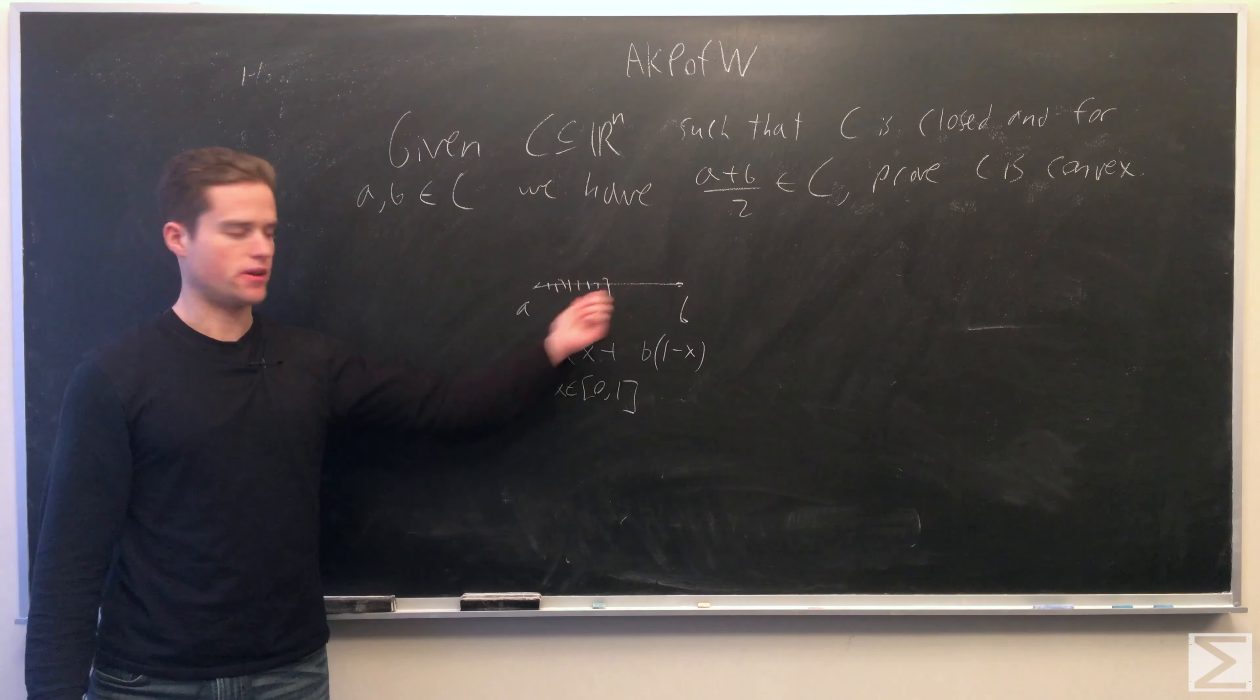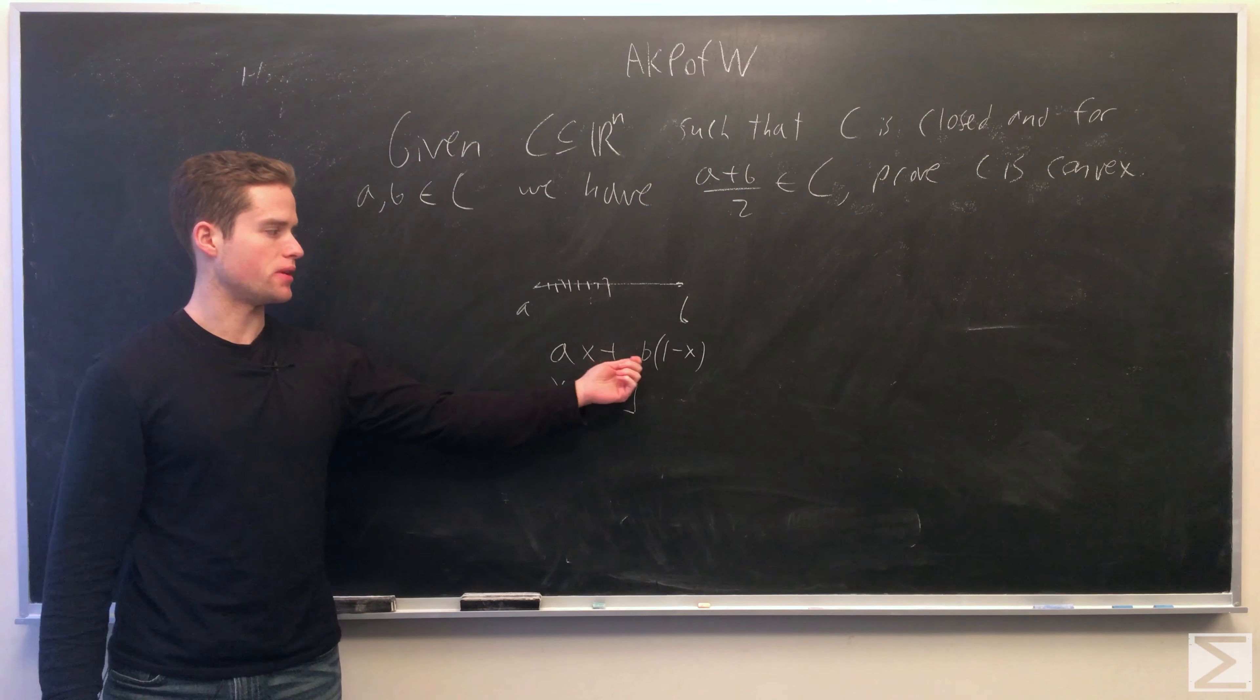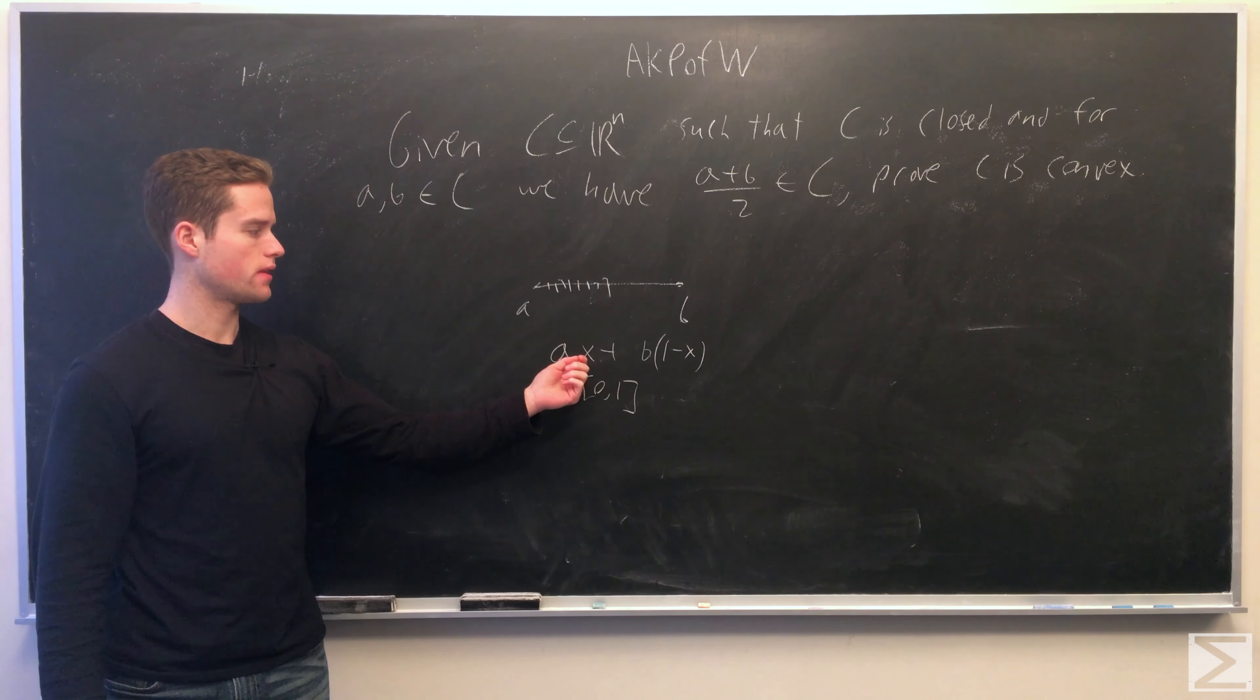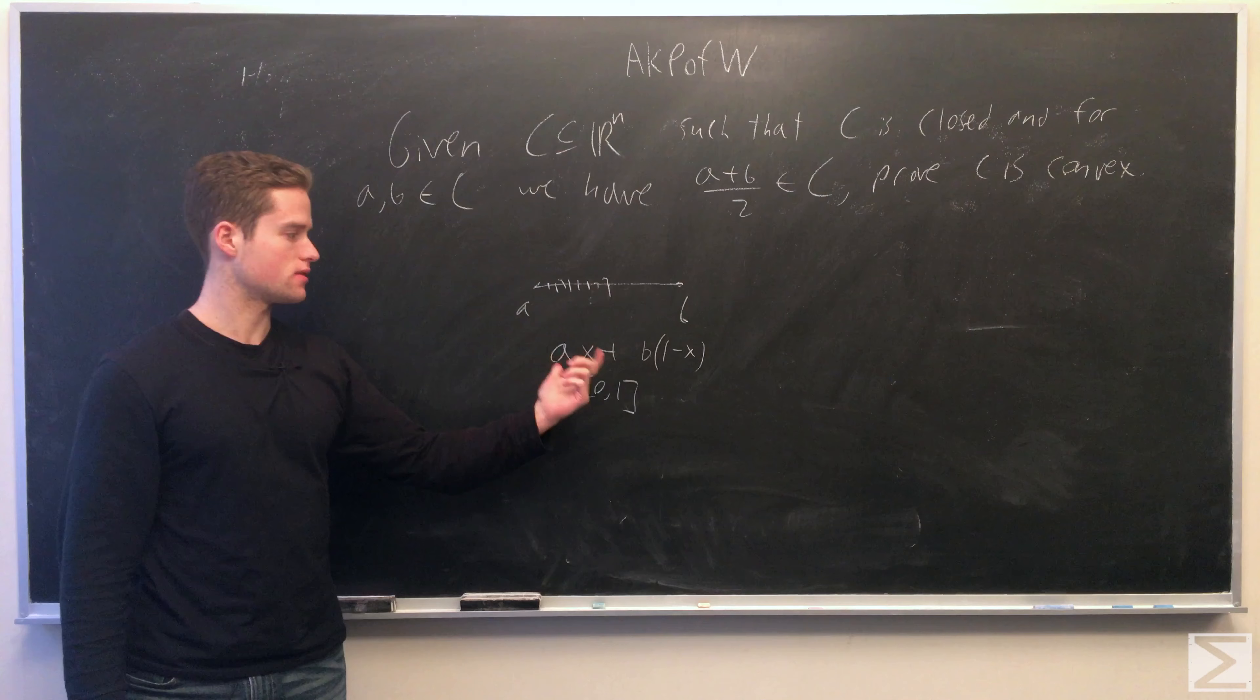So this line between A and B, we can write it as Ax plus B(1 minus x), A, B in R^n, and x in the closed interval [0, 1]. So when x equals 0 we're at B, when x equals 1 we're at A, and as we go through [0,1] we get all the points between this line.